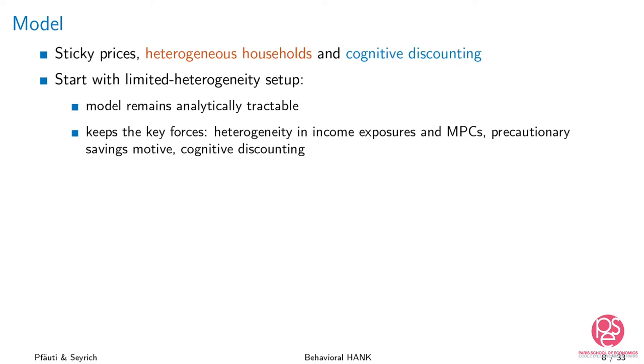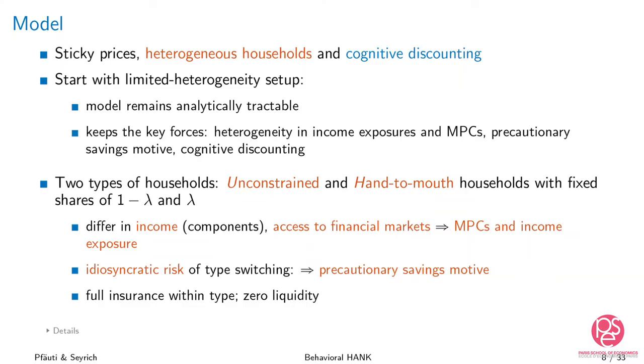We will have heterogeneity in income exposure and MPCs to account for the fourth fact, a precautionary savings motive, and cognitive discounting. There are two types of households: an unconstrained household — a standard forward-looking intertemporally optimizing agent — and hand-to-mouth households, with a share lambda of the latter. They differ in the kind of income they receive and whether they participate in financial markets, which gives us heterogeneity in MPCs and income exposures.